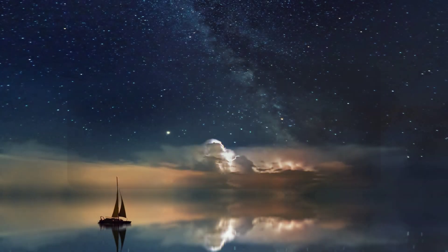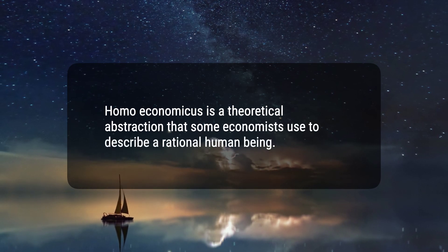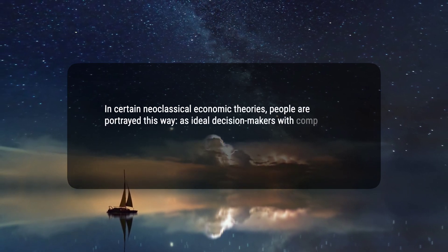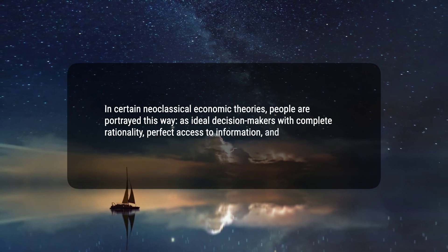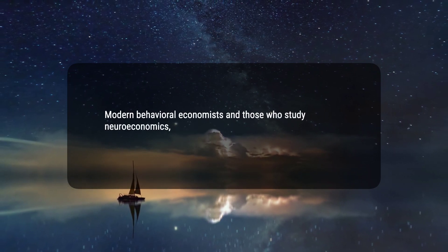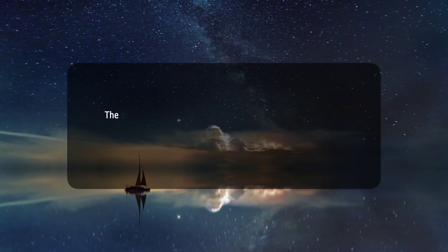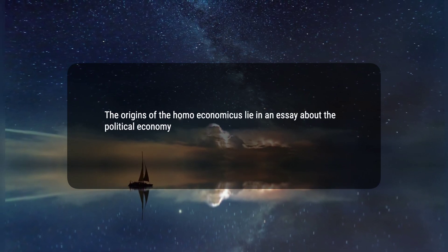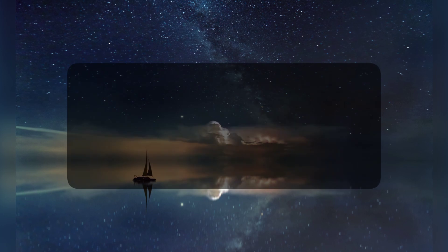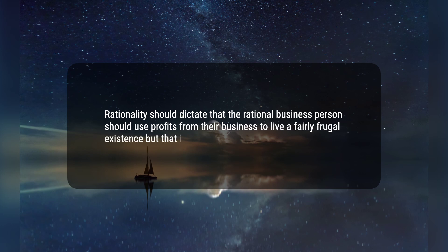Here are five key takeaways. 1. Homo economicus is a theoretical abstraction that some economists use to describe a rational human being. 2. In certain neoclassical economic theories, people are portrayed as ideal decision-makers with complete rationality, perfect access to information, and consistent, self-interested goals. 3. Modern behavioral economists and those who study neuroeconomics have demonstrated that human beings are not rational in their decision-making. 4. The origins of Homo economicus lie in an essay by philosopher and political economist John Stuart Mill in 1836. 5. Rationality should dictate that the rational business person should use profits from their business to live a fairly frugal existence, but that is not always the case.